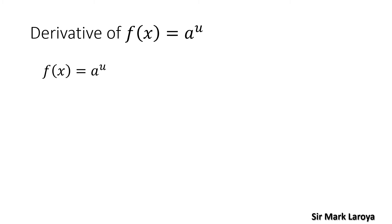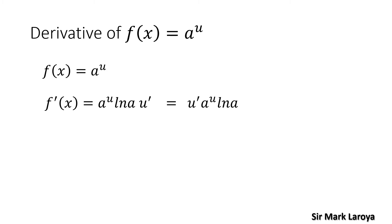So the next exponential function that we're going to derive is in the form f(x) = a raised to u, where our base a is any real number or a constant while the exponent u is any function. The derivative for this function will be f'(x) = a raised to u times ln(a) times u prime, or you can rewrite this as u prime times a raised to u times ln(a).